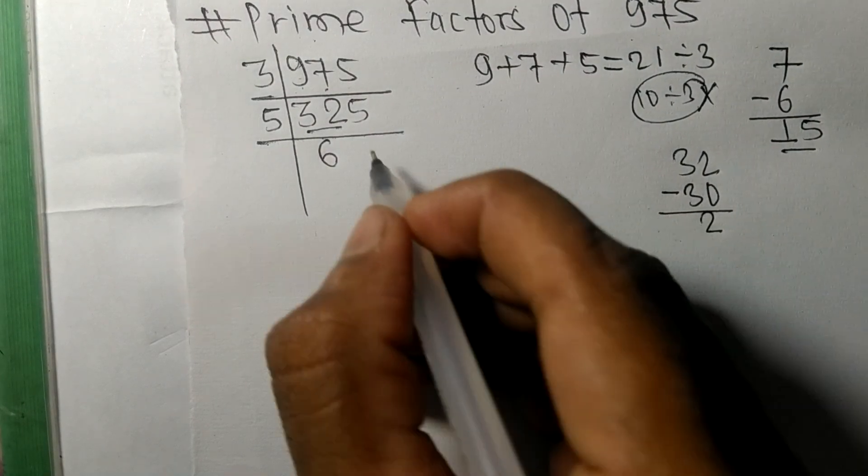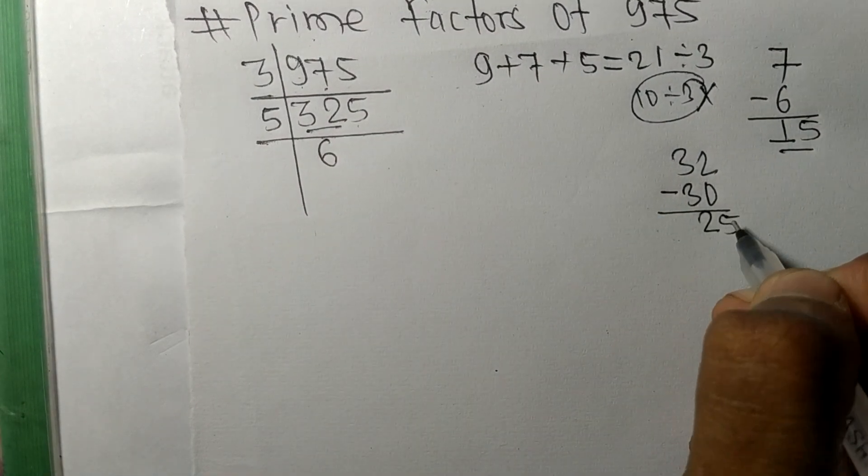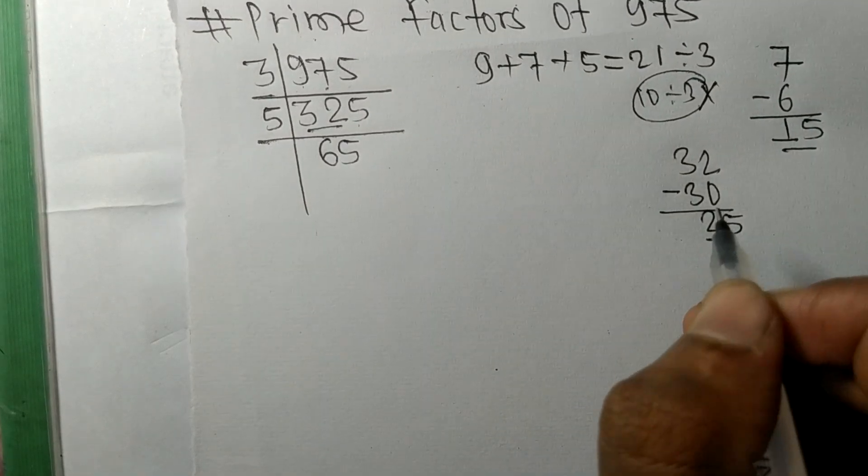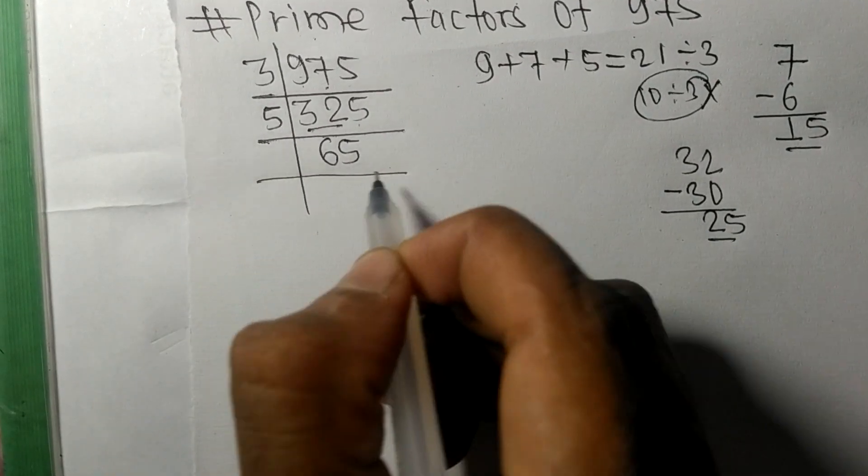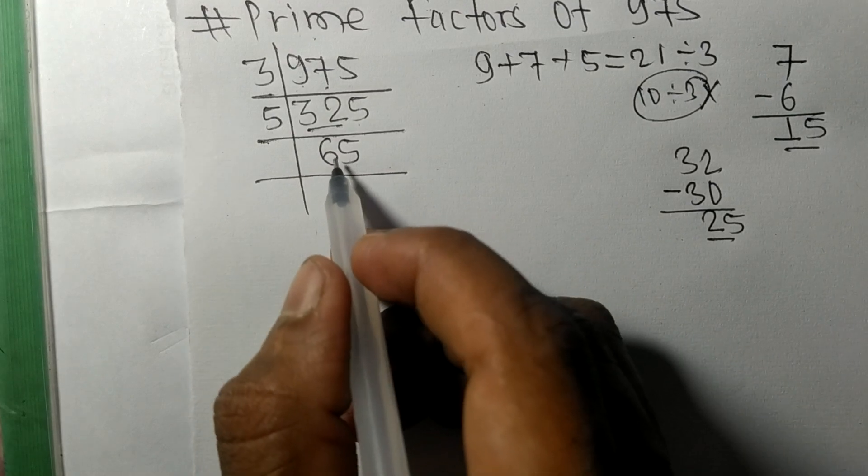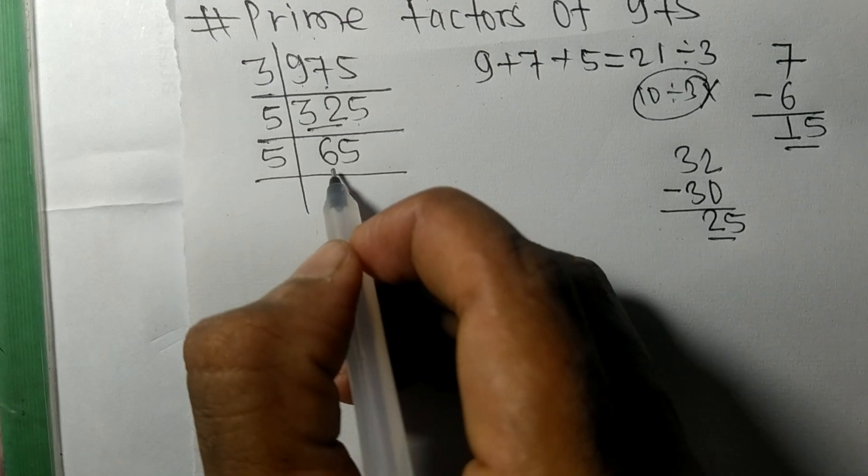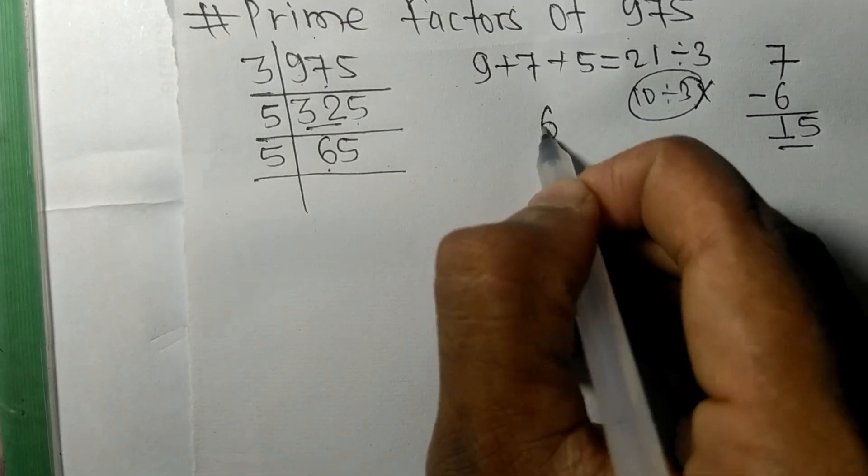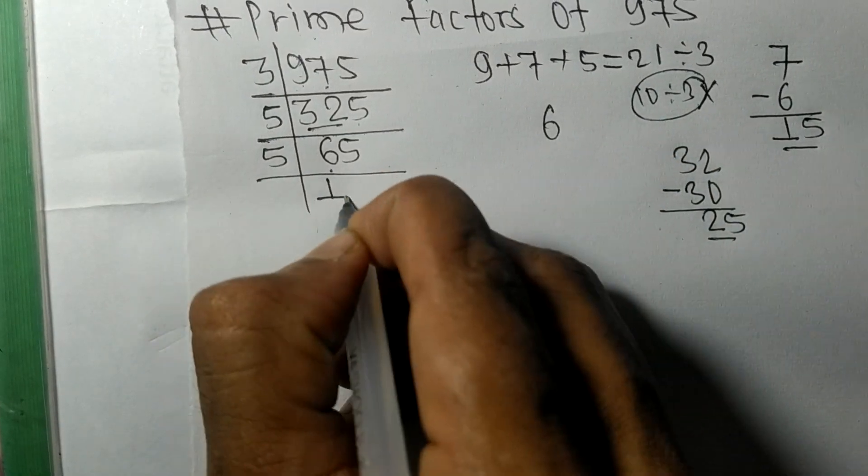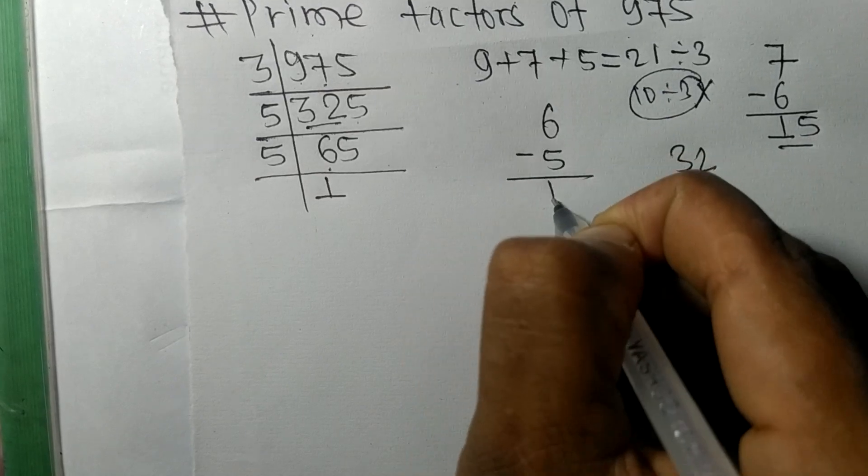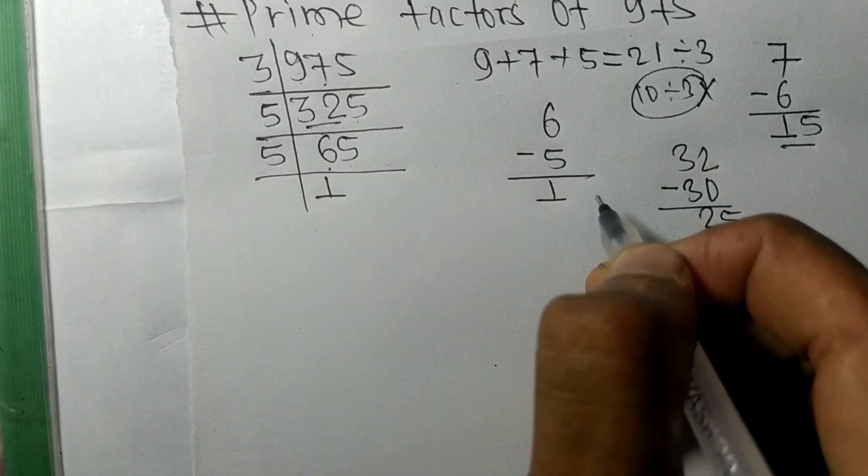Now we got 65 which is exactly divisible by 5. First we have 6, so 5 times 1 equals 5. On subtracting we get 1, and this 5 makes 15. 5 times 3 equals 15.